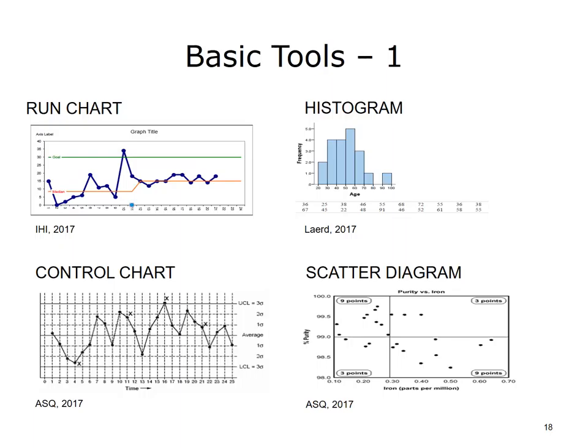Run chart: Run charts are plots of data, arranged chronologically, that can be used to determine the presence of some types of signals of special cause variation in processes. A center line, usually the median, is plotted along with the data to test for shifts in the process being studied.